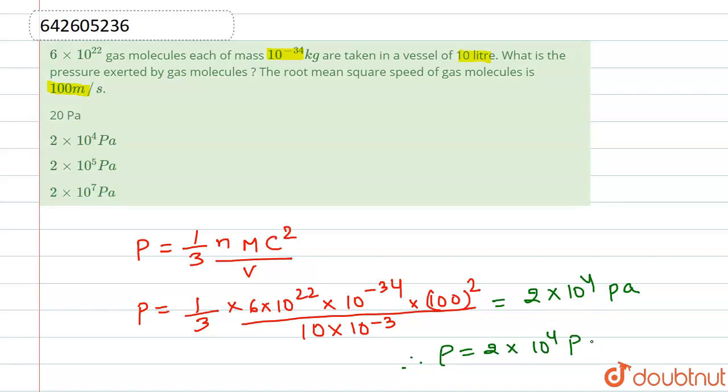Therefore, what we can conclude is pressure equals 2 × 10^4 pascal. So this is the actual pressure exerted by gas molecules, so our correct option is option B. Thank you.